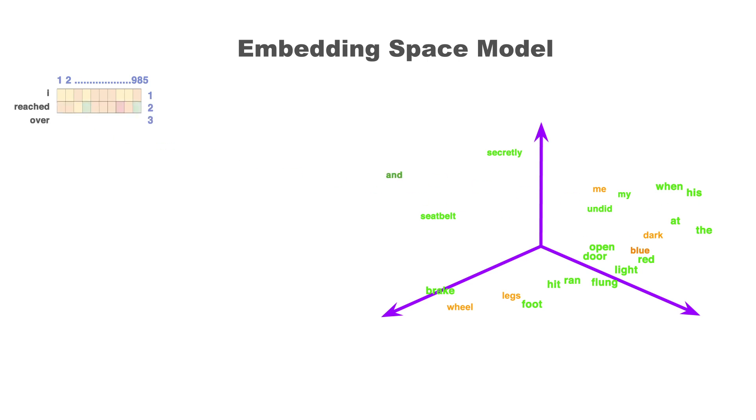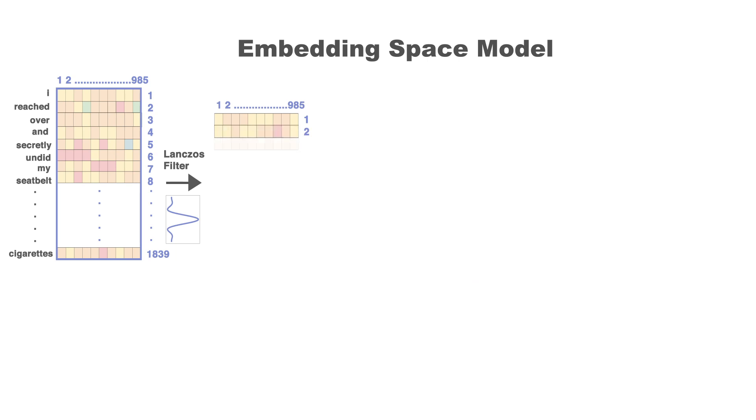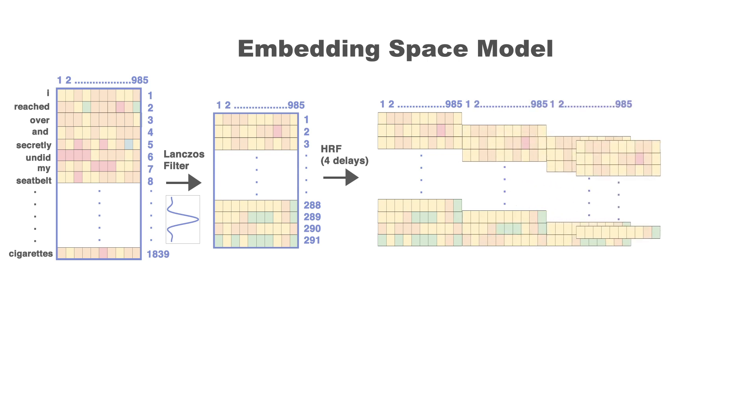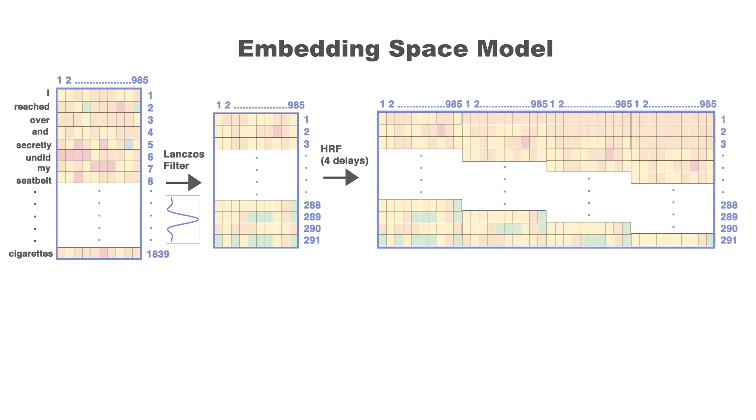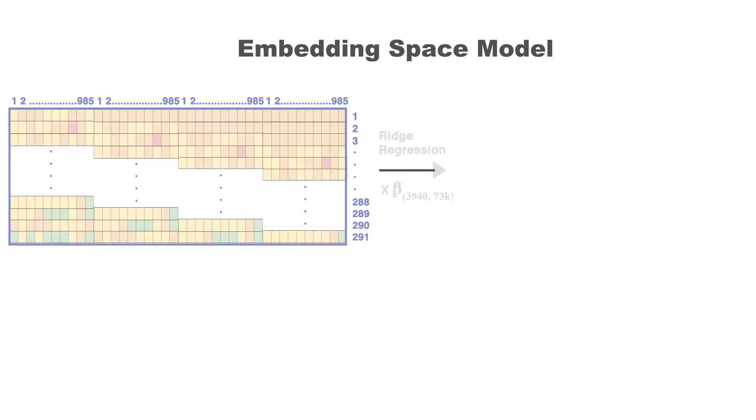To model brain responses, a vector can be extracted from the space for each word in the story. The vectors are then downsampled to match the temporal frequency of the brain response. We also add delays to account for the hemodynamic response function. The model then learns to predict brain responses by applying regression onto these vectors.